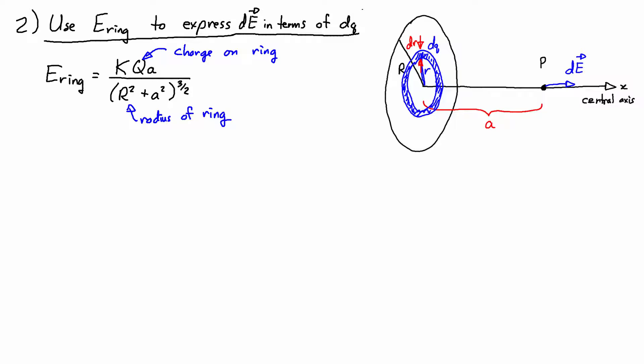When we're setting this up in this problem, q is actually equal to dq because that's the charge on the ring. And capital R is actually equal to small r because we're using small r to represent the radius of the ring.